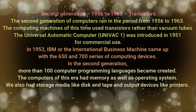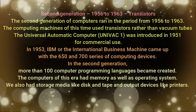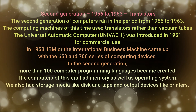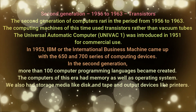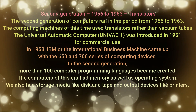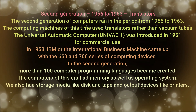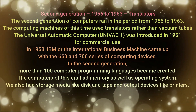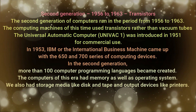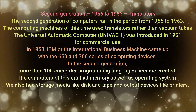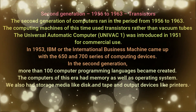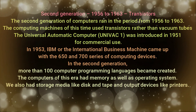Second generation computers: The second generation ran from 1956 to 1963. Computing machines of this time used transistors rather than vacuum tubes. The Universal Automatic Computer, UNIVAC 1, was introduced in 1951 for commercial use. In 1953, IBM — the International Business Machine — came up with the 650 and 700 series of computing devices.